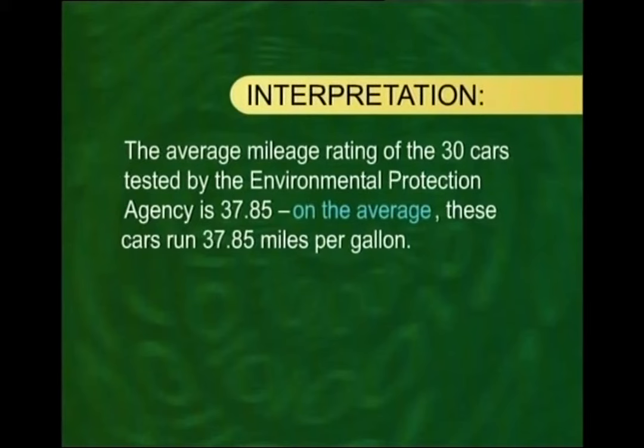The average mileage of these cars tested by the Environmental Protection Agency is 37.85 miles per gallon. Recall that the mode came out to be 37.825 miles per gallon. The two answers are slightly different — and that is obvious, since the mode and the mean are two different measures of central tendency with different formulas.